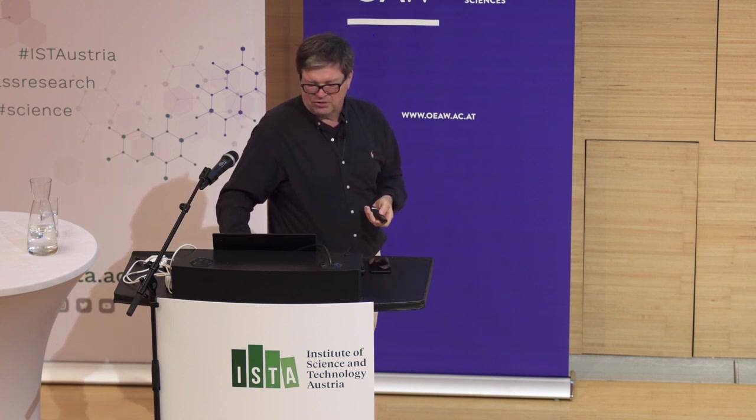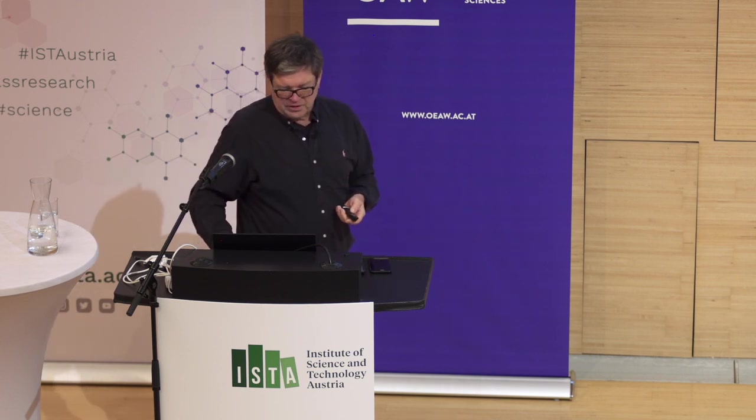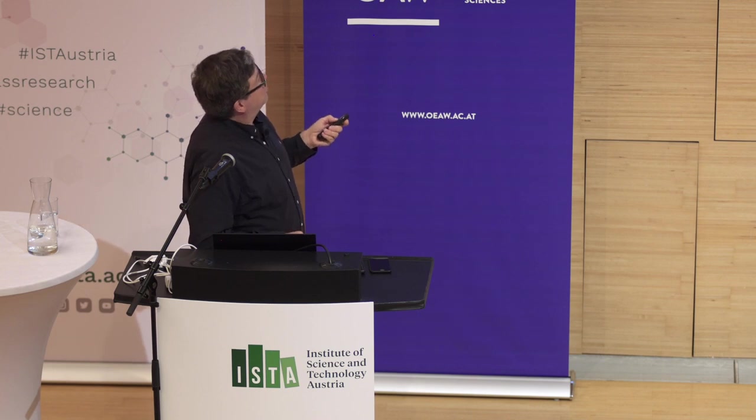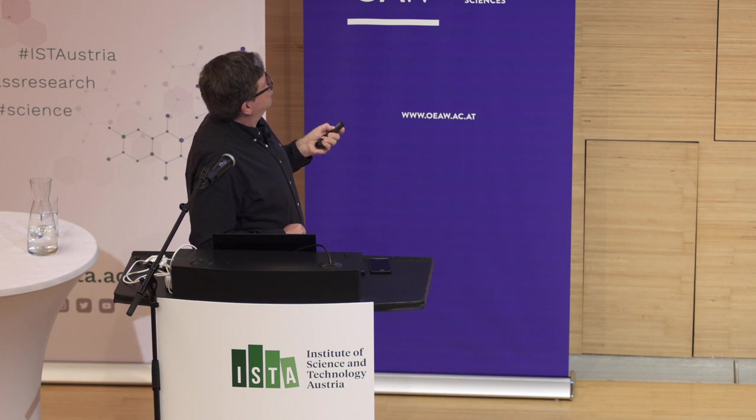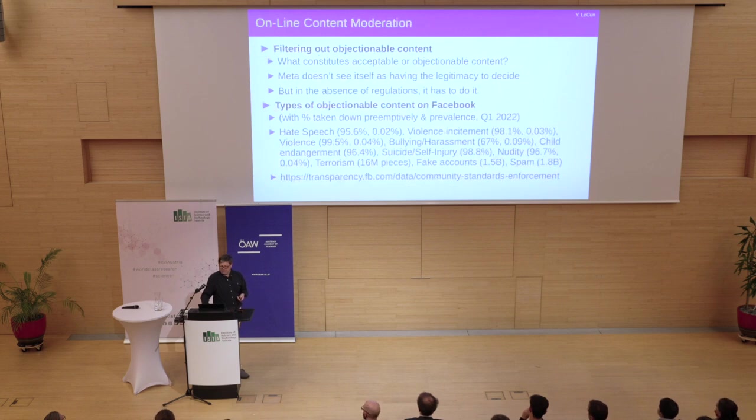And it's very useful also because it would be useful to give access to digital technology to a lot of people who basically don't have it at the moment, either because they are illiterate, there's 800 million illiterate people in the world today, or because they're visually impaired. And so if you have a system that can just speak or understand your speech, that's quite useful and tell you the content of an image, that's quite useful.